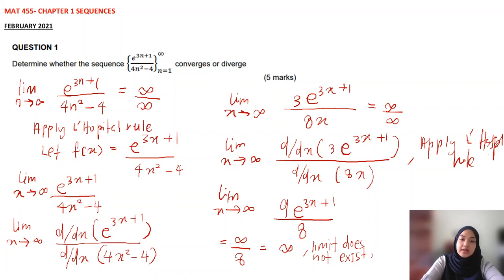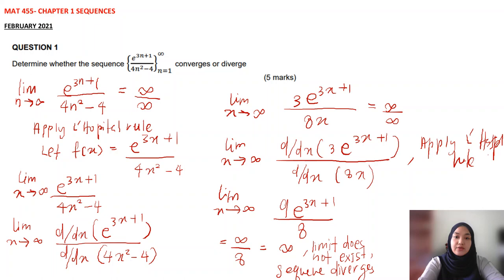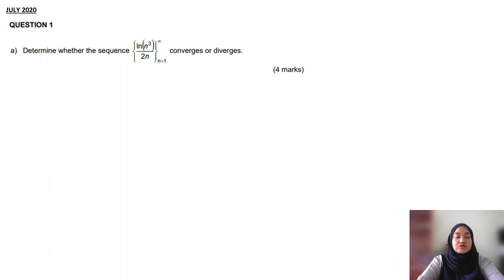Hence, the limit does not exist. Therefore, the sequence is diverged. That's the answer for question number 1. What you need to remember: you have to put the limit all the way as you solve the question, not just the first part. We continue to the next example of a sequence from the next past-time paper.